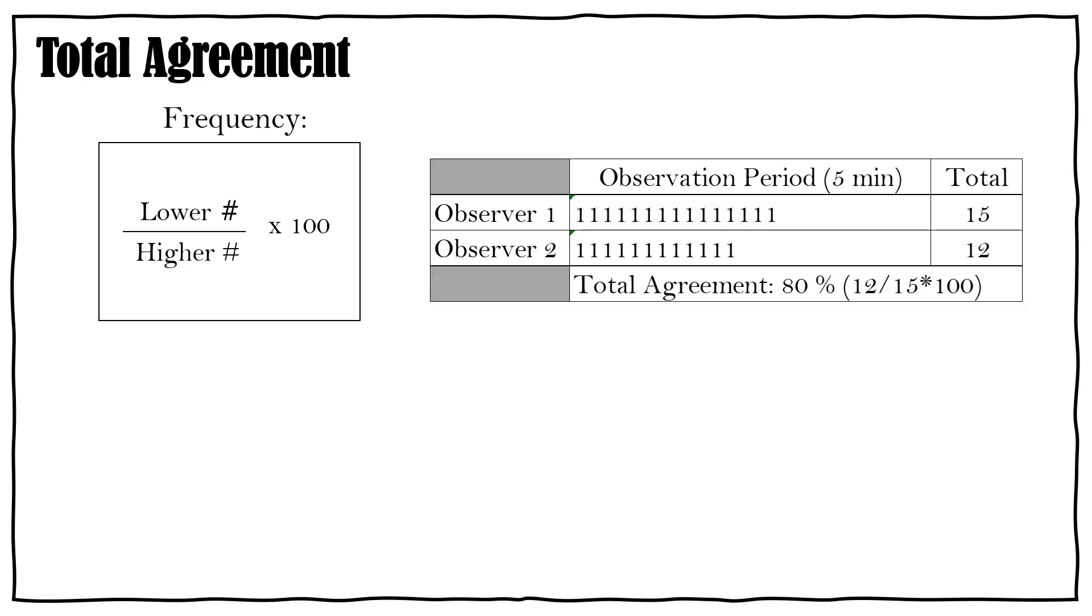Alright, I'm going to talk about two different types of agreement, and there are more ways to calculate IOA but these are two really simple ways. When you guys are teaching this is probably the last thing on your mind, so hopefully you guys remember this little video and every once in a while you can check your reliability. Super easy to do with these two methods. So total agreement you can use with your dimensions of behavior, so frequency, latency, duration, things like that.